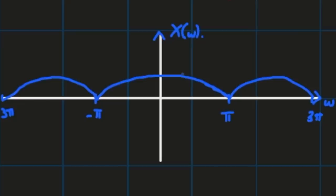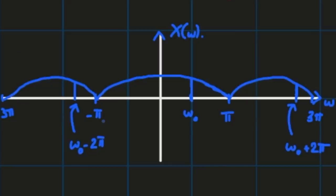If you're looking at a frequency ω0, it's the same as looking at ω0 + 2π, its companion or alias. So ω0 + 2π, ω0 + 4π, ω0 + 6π, and so on all correspond to the same sinusoid. The same holds for negative frequencies. Because of this, we call sinusoids with frequency outside [-π, π] an alias of a corresponding sinusoid with |ω| < π.